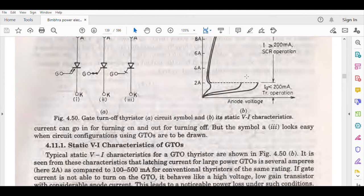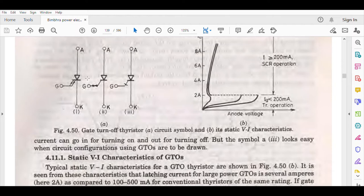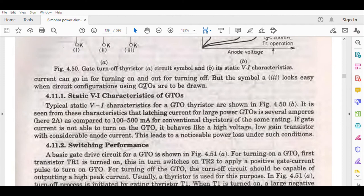Self-explanatory - gate current can go in for turning on and out for turning off. The symbol looks easy when circuit configurations using GTOs are to be drawn.